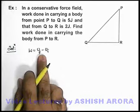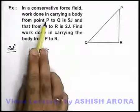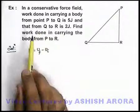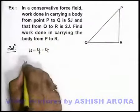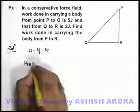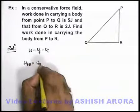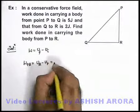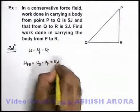In this situation, we can see that when the body is taken from point P to Q, work done is 5 joules. So work done from P to Q can be written as potential energy at Q minus potential energy at P, which is given as 5 joules.